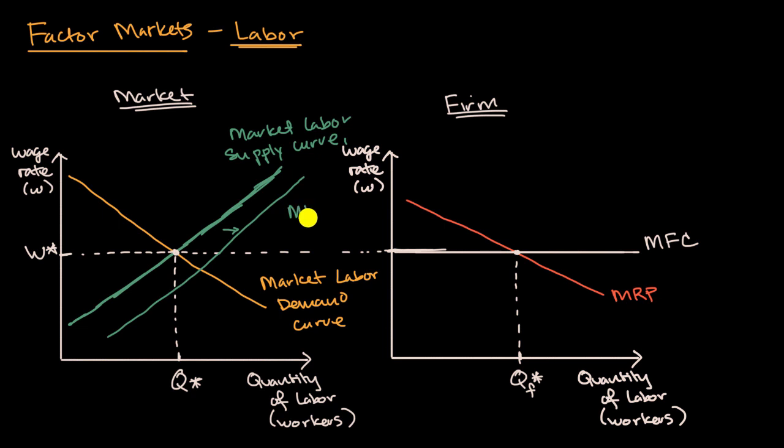So this is the market labor supply curve two. Now what does that do to the equilibrium wage and the quantity of labor? Well, our new equilibrium wage is going to be lower. Put it right over there. I'll call that W sub two with a little star there.